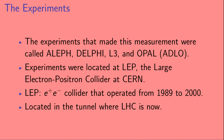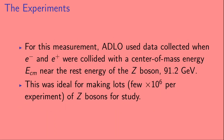The experiments that made this measurement were called Aleph, Delphi, L3, and Opal — sometimes abbreviated as ADLO. These experiments were located at LEP, the Large Electron-Positron Collider at CERN. LEP was an electron-positron collider that operated from 1989 to 2000, located in the tunnel where the LHC, the Large Hadron Collider, is now located. For this measurement, ADLO used data collected when the electron and positron were collided with a center-of-mass energy ECM near the rest energy of the Z boson, which is 91.2 GeV. This was ideal for making lots of Z bosons for study — lots meaning a few million for each of the four experiments.